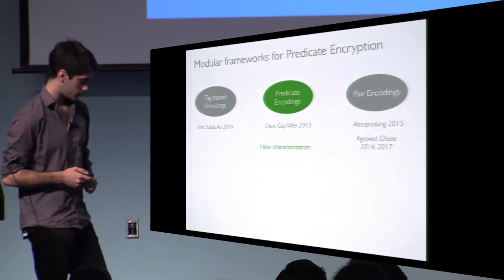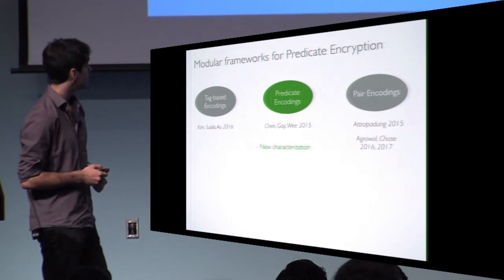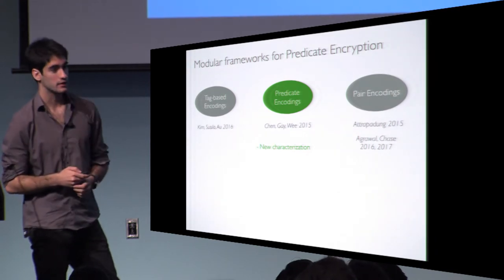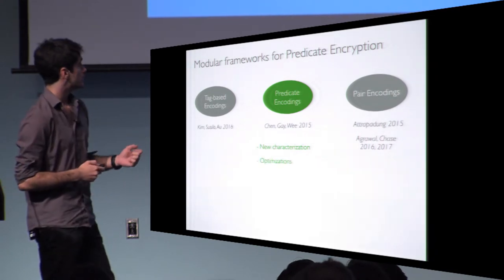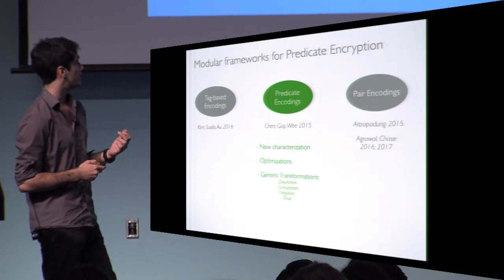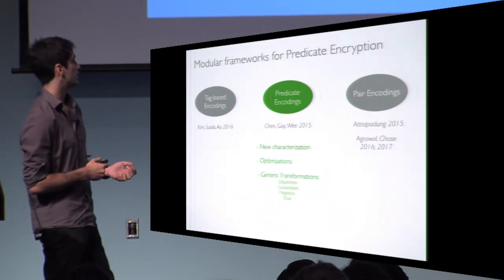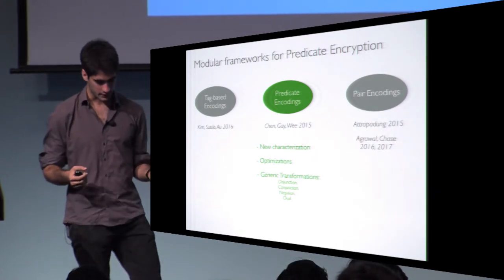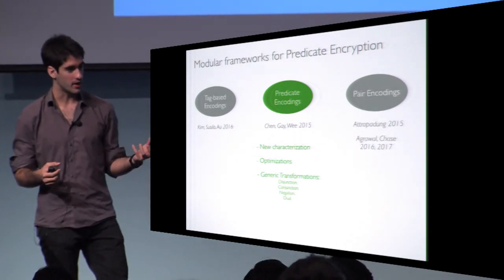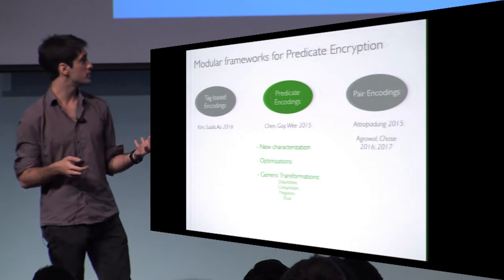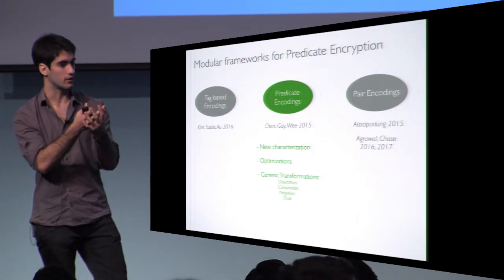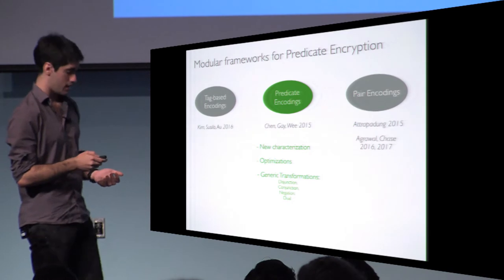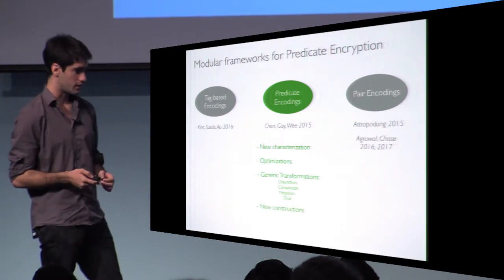In this work, we first provide a new characterization of predicate encodings, show how to optimize them, and provide transformations such as disjunction, conjunction, and negation. So if you start from a predicate encoding for P1 and another for P2, we show how to convert these into a predicate encoding for P1 AND P2, for example. We also show new constructions from these results.